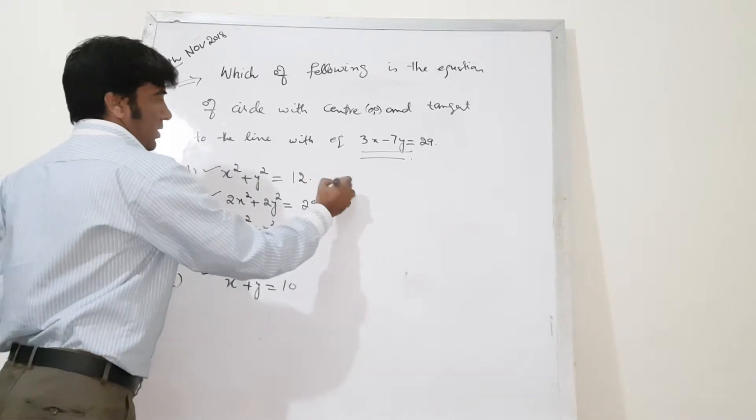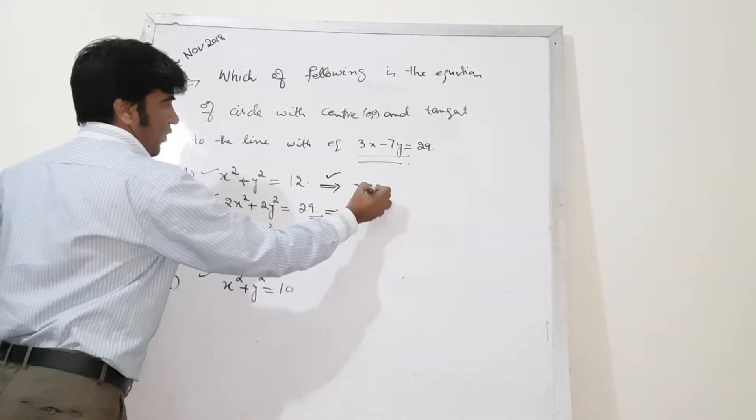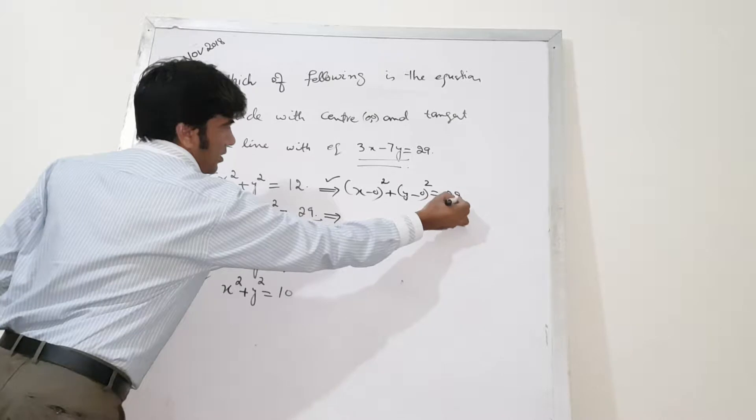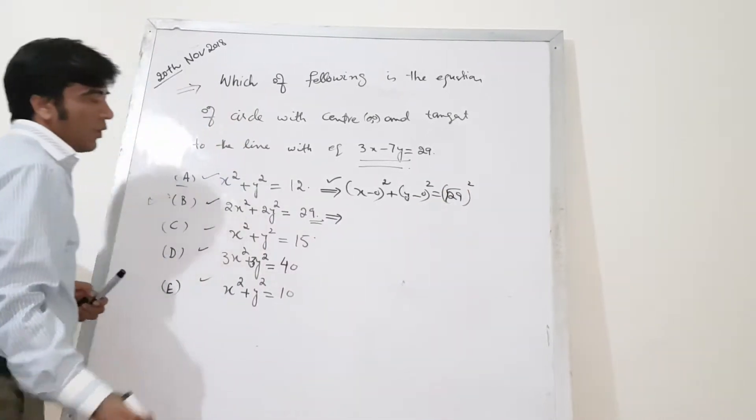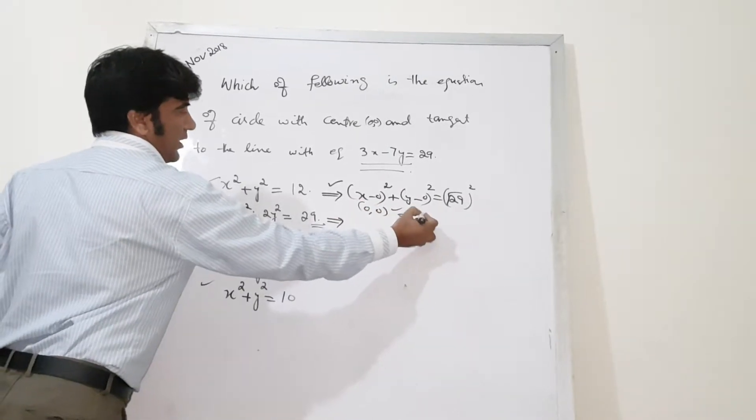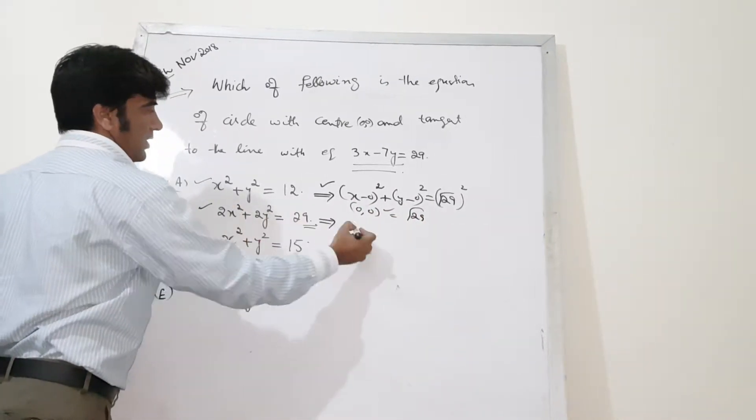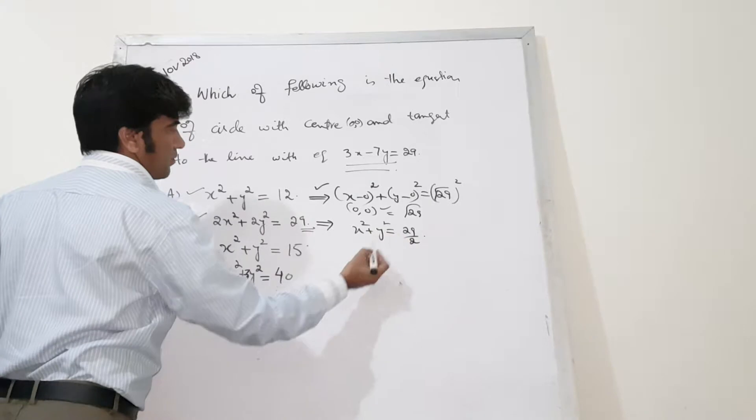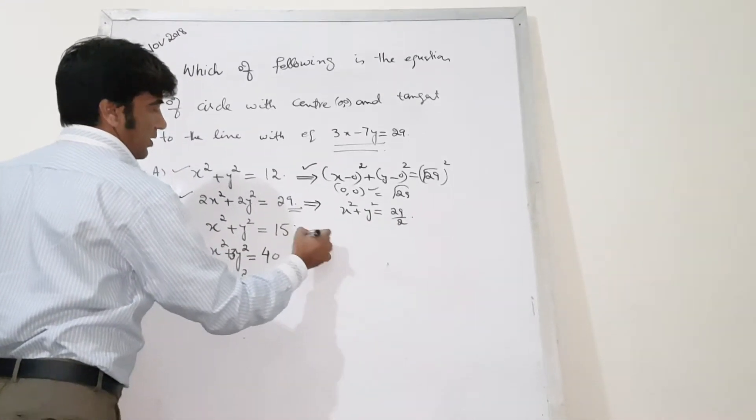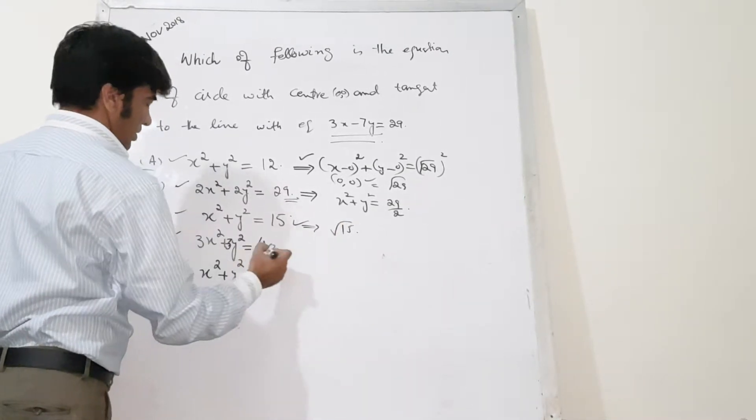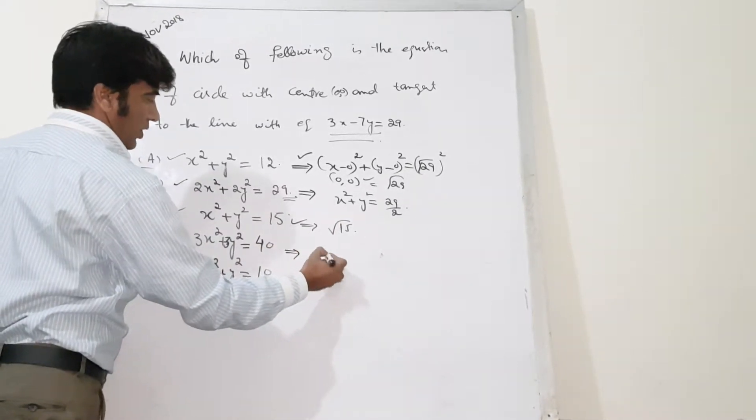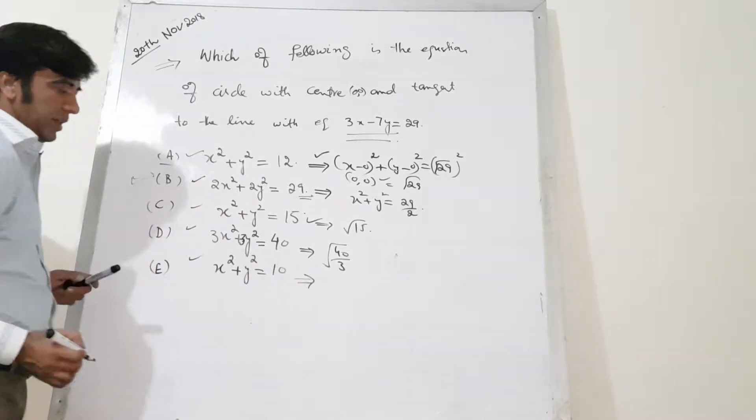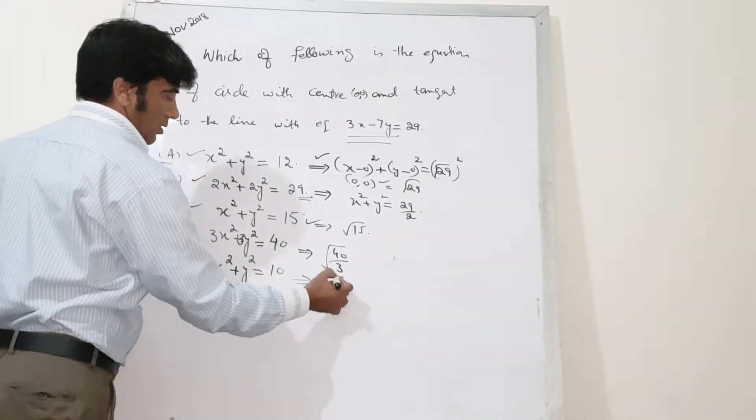From there you see this is already in simplified form. If you see carefully, this could be written this way where center is origin and radius is 29 over square root. Same way this equation can be written this way, and now this is already written there. The radius for this would be 40 over 3 if you take the square root of this, and it's already simplified with this radius.